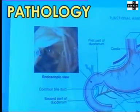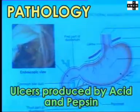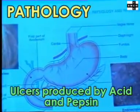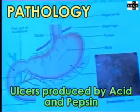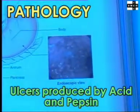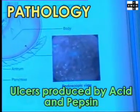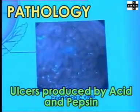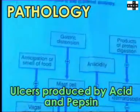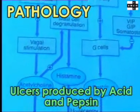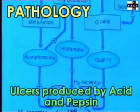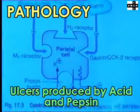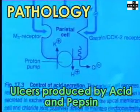Pathology: Peptic ulcers were so named because, in addition to the acid, pepsin is also required for the formation of ulcers. However, the acid is more important. Although acid levels are higher in patients with peptic ulcers compared to normal subjects, there is considerable overlap.